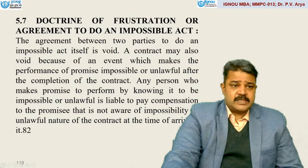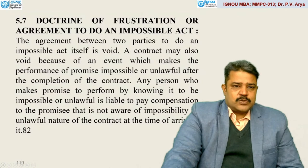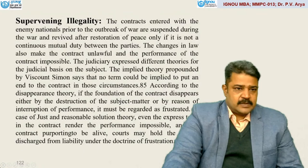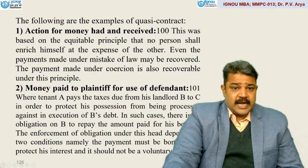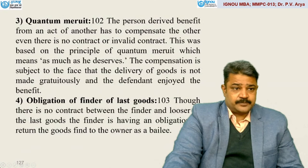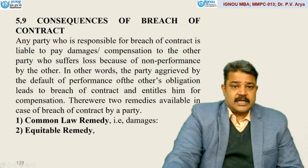Time and place of performance, performance of reciprocal promises, and doctrine of frustration or agreement to do an impossible act — the agreement between two parties to do an impossible act itself is void. There is also supervening impossibility, supervening illegality, doctrine of frustration, limitation, appropriation of payments, and contracts which need not be performed. Action for money had and received: money paid to plaintiff for use of defendant, quantum meruit, obligation of finder of lost goods, necessaries supplied to a person incapable of contracting, and consequences of breach of contract. The remedies are common law remedy and equitable remedy.